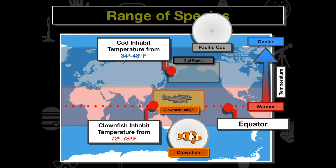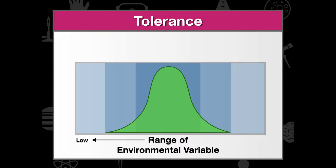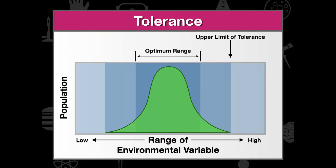If we were to take these organisms and put them outside their respective ranges, they would die because they simply do not have the tolerance for those temperature ranges. We can see a graphical representation of this: on the left is the low end of the environmental variable range, on the right is the high end. All species have an optimum range in which they survive, with an upper limit and a lower limit to that tolerance, where maximum population occurs. Anything beyond these limits, the population will be close to zero.